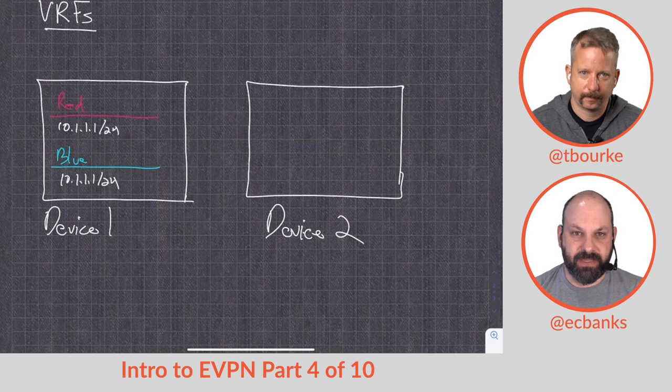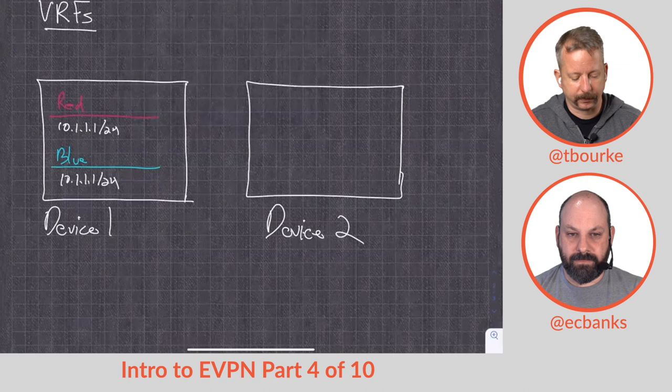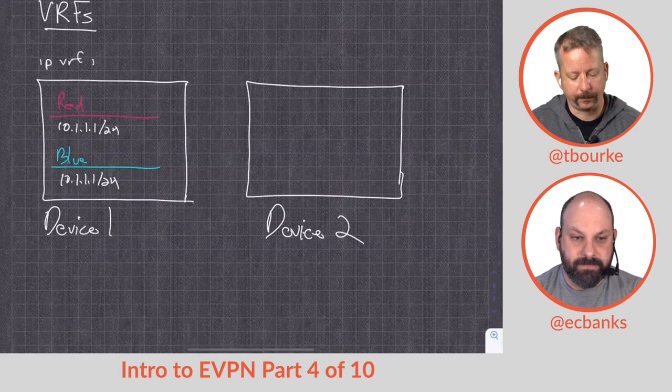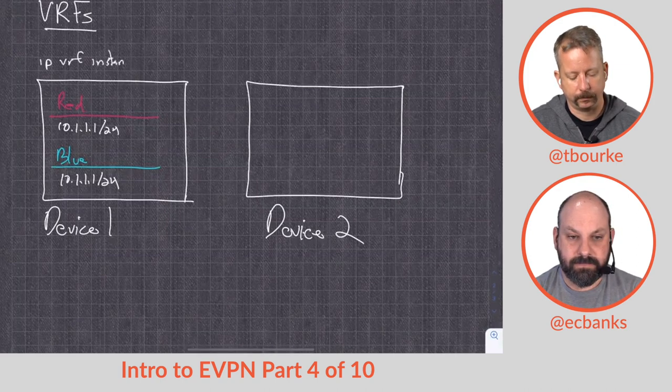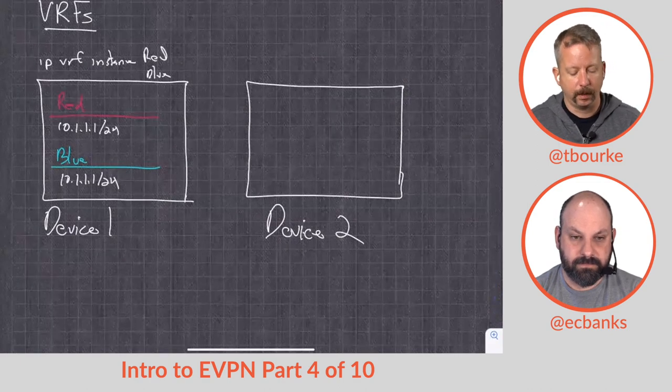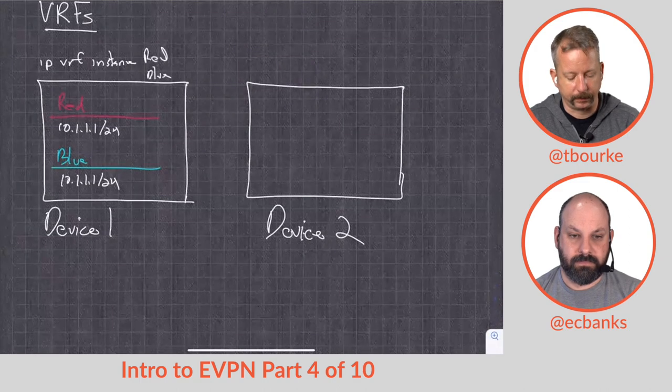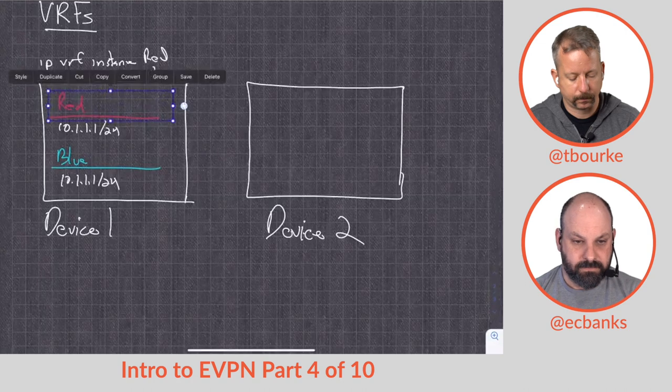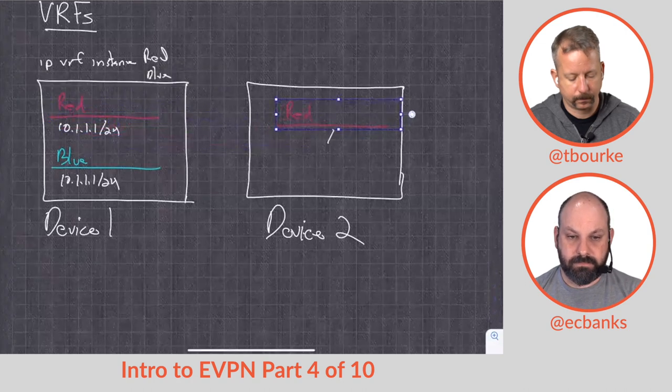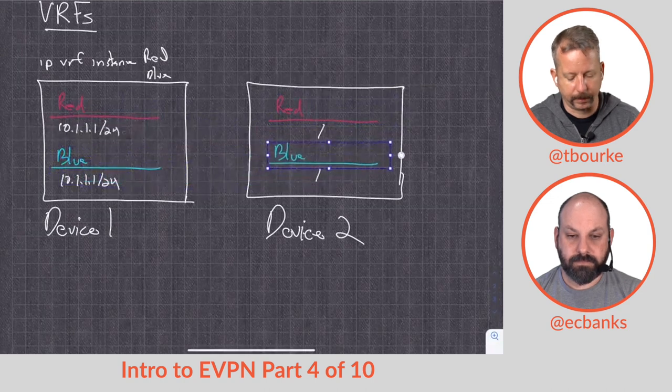And then we configure them in like a Cisco or Arista device, it'll be like IP VRF instance whatever syntax - red, and then another one for blue. We declare them and then it sets up a separate forwarding table on each device. Let's say I've done the same configuration on both devices.